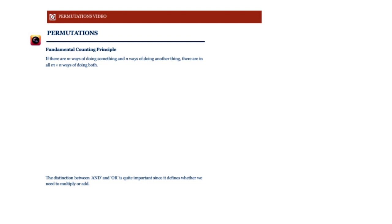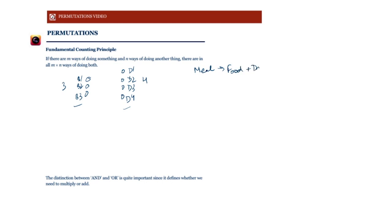Take an example: say I go to a fast food place and there are three different burger choices — B1, B2, and B3 — and four different beverage choices — D1, D2, D3, and D4. So three burger choices and four beverages. I can choose a burger in three ways and a beverage in four ways. In how many ways can I choose a meal? My meal is going to be one burger plus one beverage.